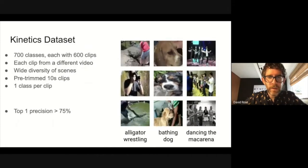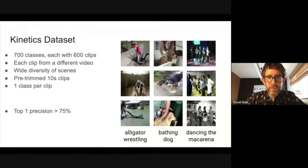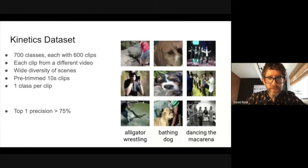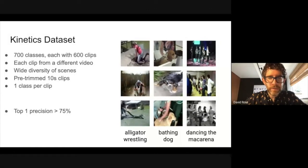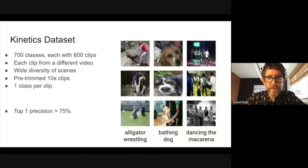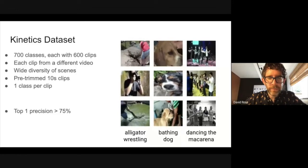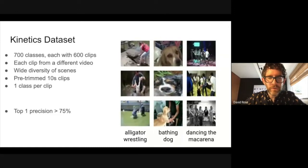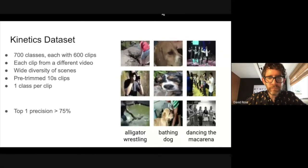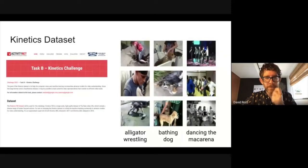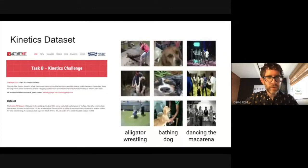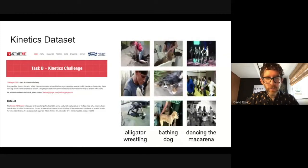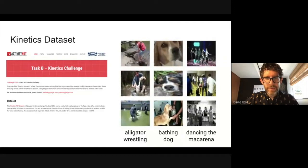On the other end of the spectrum from AVA is the widely used Kinetics dataset, which includes 700 different classes with at least 600 examples each. Each clip is from a different video, hence there's a very wide diversity of scenes. However, Kinetics only annotates a single action class for each 10-second video clip. Performance on Kinetics is comparatively quite good. Methods can achieve a top one precision of over 75%. If you're not familiar with Kinetics, Kinetics is the basis of the previous challenge in this workshop, ActivityNet Task B, Trimmed Activity Recognition. I encourage you to watch that video to learn more about Kinetics and the methods that have been used successfully on it.